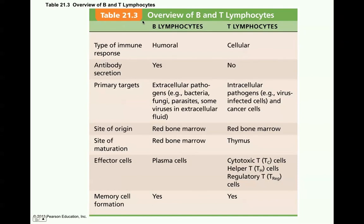Table 21.3 is an overview of B and T lymphocytes. B lymphocytes — the type of response is humoral, and they do secrete antibody. Their primary targets are extracellular pathogens such as bacteria, fungi, parasites, and some viruses in the extracellular fluid. Their site of origin is red bone marrow, and site of maturation is also red bone marrow. The effector cells are called plasma cells, and they do have memory B cells. Memory cells keep a memory of the encounter — the type of antibody made in response to a specific antigen.